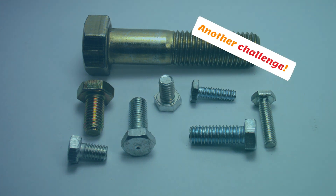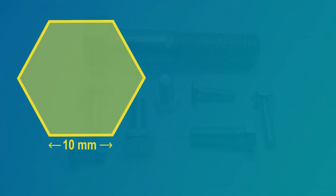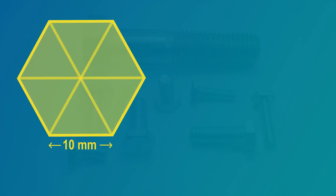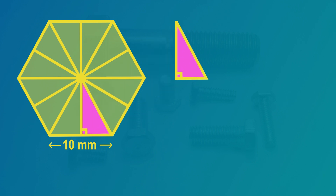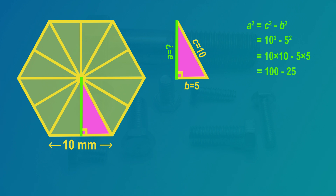Let's do another challenge. This bolt has the shape of a hexagon — it has six sides. Each side is 10 millimeters long. Let's calculate the area of the hexagon. It's made of six equilateral triangles, or 12 right angle triangles. In the right angle triangle, C equals 10 millimeters and B equals 5 millimeters. We use the A squared rule: A squared equals C squared minus B squared. That's 10 squared minus 5 squared. So 100 minus 25 is 75. A is the square root of 75, which is 8.7 millimeters.